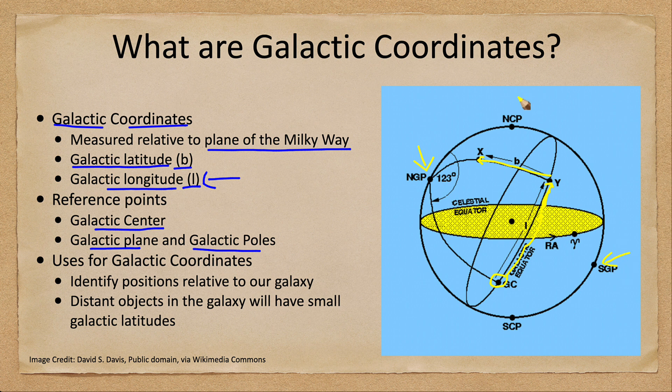They are nowhere near the celestial poles, and that's because the plane of the galaxy is not the same as the plane of Earth's orbit. Earth is tilted relative to the galaxy — that's essentially what that is telling us.